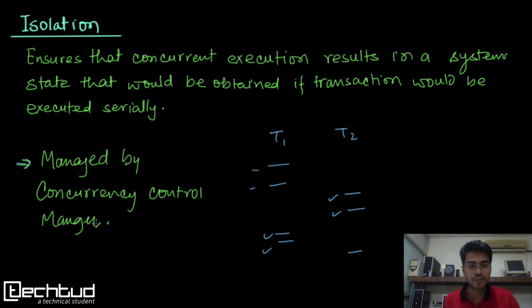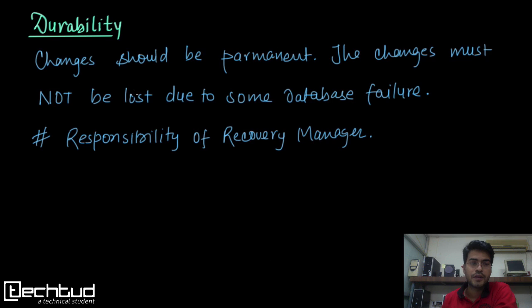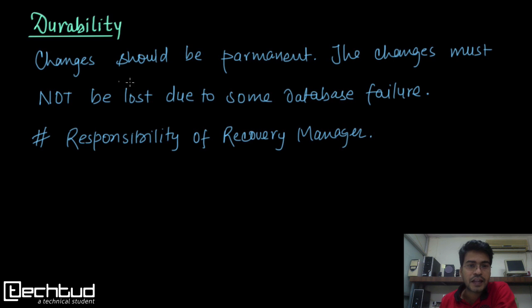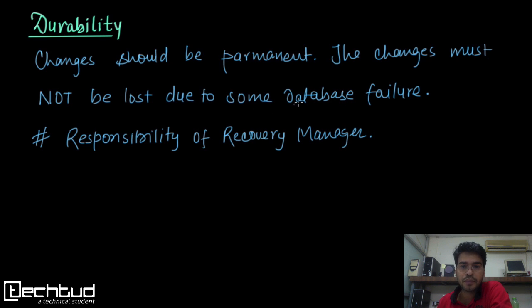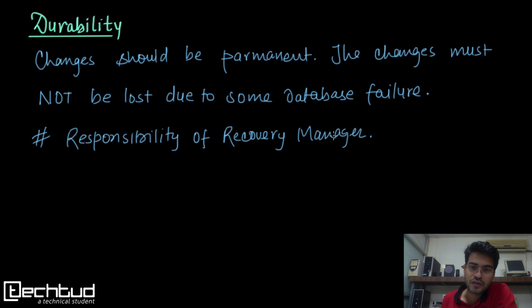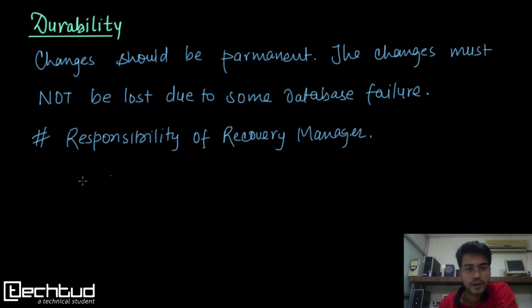The next property is durability. This property says that changes should be permanent. Whatever changes have been made by a transaction after completion, these changes should be permanent and should not be lost due to some database failure. If a transaction is aborted in between, we have to roll back, and this is the property managed by the recovery manager.